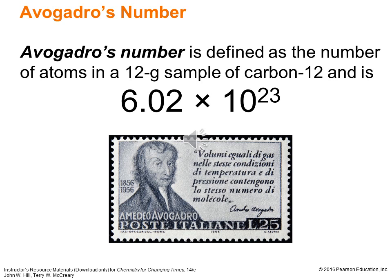We've been dealing with Avogadro's number already in the course, but let's define it. It's defined as the number of atoms in a 12-gram sample of carbon-12. That particular stable isotope of carbon has been used to define the mole, and therefore that number is 6.02 × 10²³. Amadeo Avogadro worked a lot with gases — hence Avogadro's hypothesis — and was able to use those gas relationships to propose the number. He didn't actually solve it; it was solved after his death, but in his honor we call it Avogadro's number.